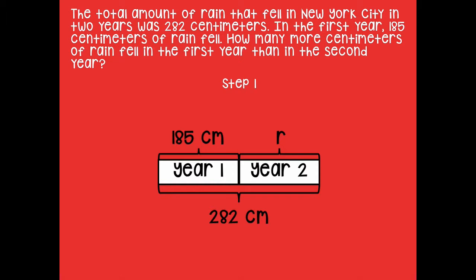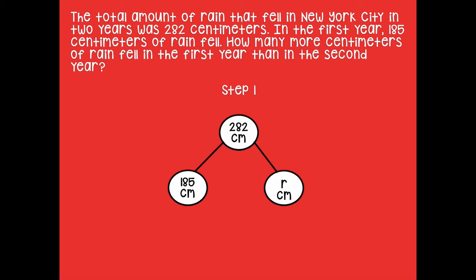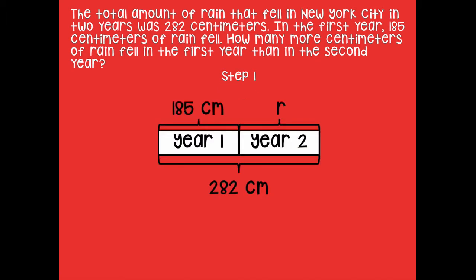I also want to show you a number bond as another strategy. For step one, your total is 282 centimeters — one part of the number bond is the first year and the other part is the second year, which is unknown. I labeled that as R for the unknown. So that's another way you could model this problem — using a tape diagram or a number bond.